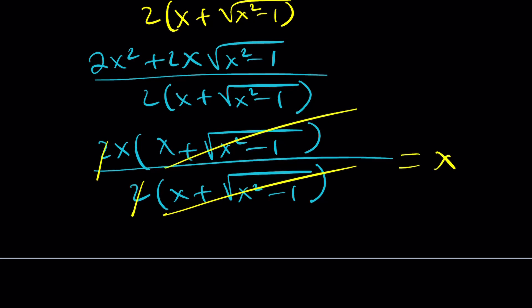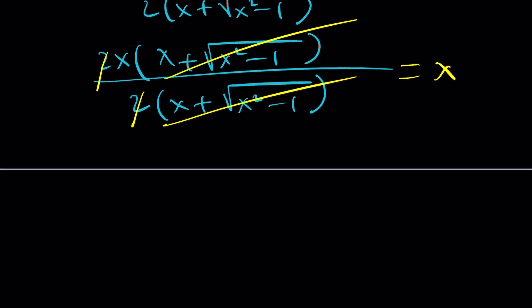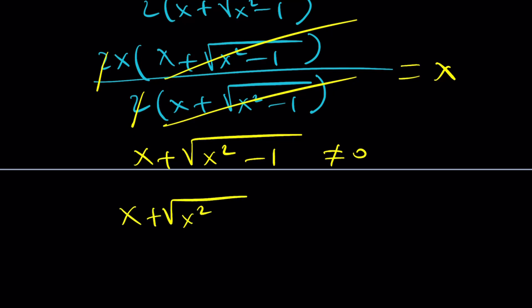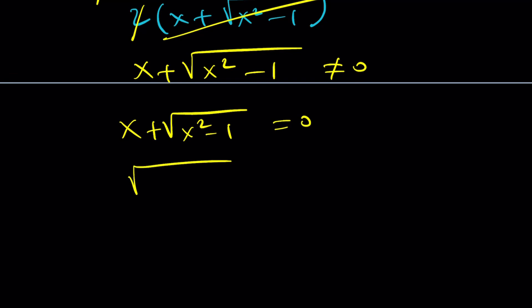So our solution actually satisfies the original problem. The only problem is that x plus the square root of x squared minus 1 should not be 0, right? Now the question is then, what happens if this is 0? Well, it kind of implies the following.